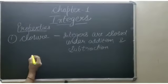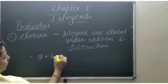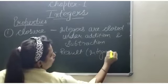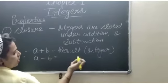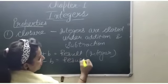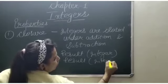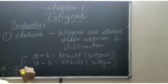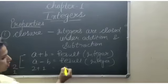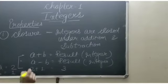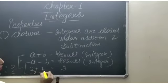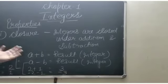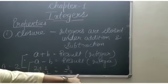For example, A plus B — the result is always an integer. Similarly, A minus B — the result is always an integer. Suppose A is 2 and B is 1: in case of plus, 2 plus 1 equals 3, which is an integer. And in the second case, if A is minus 2 and B is minus 1, the result will be minus 3, which is also an integer — one is a positive integer and one is a negative integer.